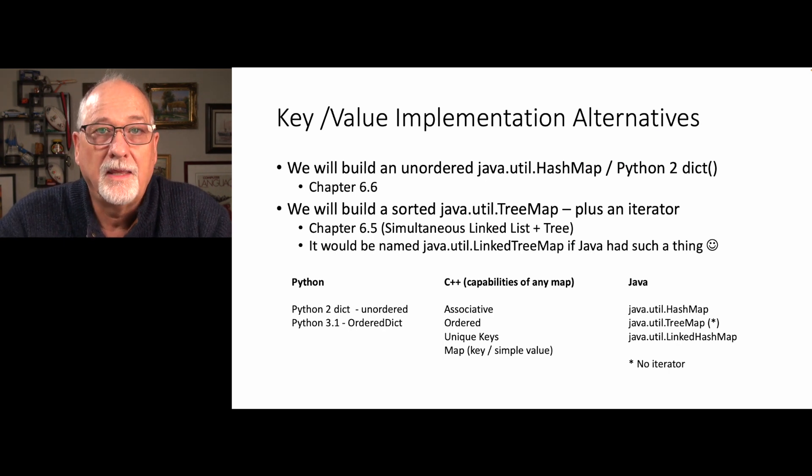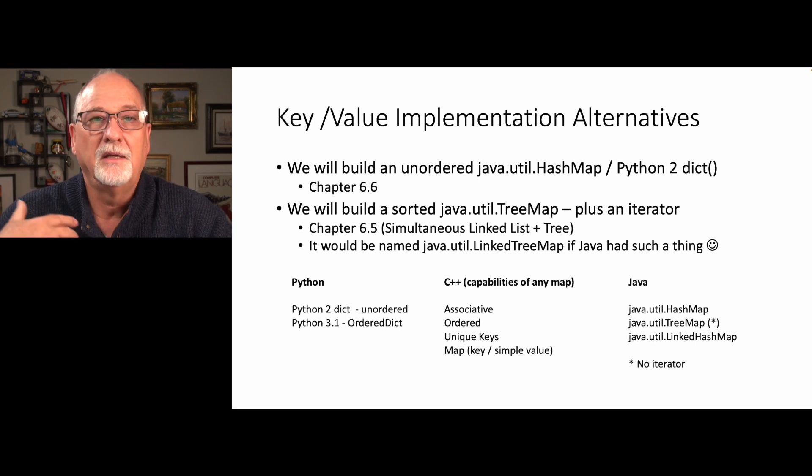So the idea here is we're exploring different key value implementation alternatives. We will build an unordered Java-based hash map, which is like a Python 2 dictionary. If you recall, Python 2 had unordered hash maps, which meant you sort of ended up with your stuff coming out in a random order. It was the same order, but every time you inserted something, the order might change. Now, Python 3, later versions of Python 3, they tend to be ordered, which are more like the list map that we did.